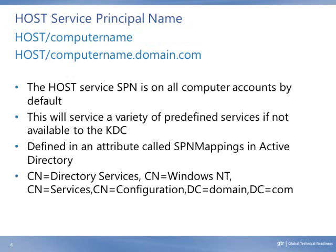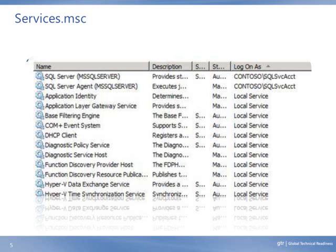Let's take the concept of service principal names a little further and talk about SPNs and how they relate to processes and services. Many services on a computer will run as the identity of that computer, which is why those services would appear entered in Active Directory in the SPN attribute for that computer object. But it is common for a service to run under a different identity.